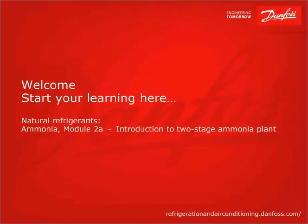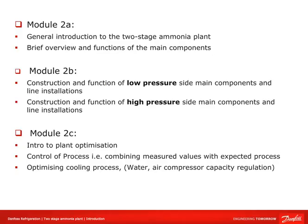Introduction to the two-stage ammonia plant. This course has three modules. In this module we will cover a general introduction to the two-stage ammonia plant and go through a brief overview and functions of the main components. In module 2a and 2b we will concentrate on how we construct and the function of components in line installations on the low-pressure and high-pressure side of the plant. In module 2c we will briefly introduce plant optimization.